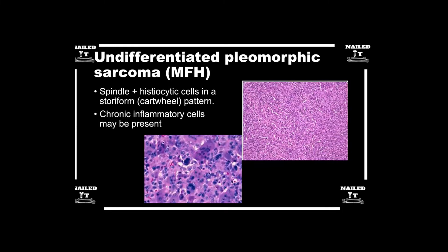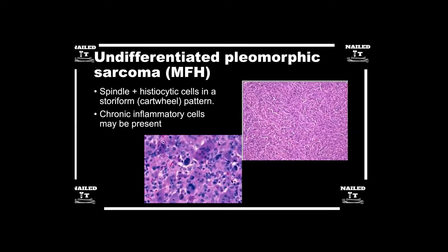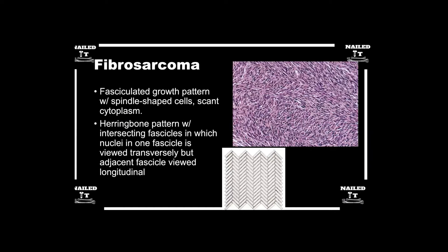The most common subtype is undifferentiated pleomorphic sarcoma, which we think about side by side with fibrosarcomas. They present the exact same way — adults, sometimes older adults, with a painless enlarging mass. Histologically, the two are a little different. Fibrosarcomas are the ones we think about with that herringbone organization, where the spindle-shaped sarcomatous cells organize themselves in that herringbone or zigzag pattern.